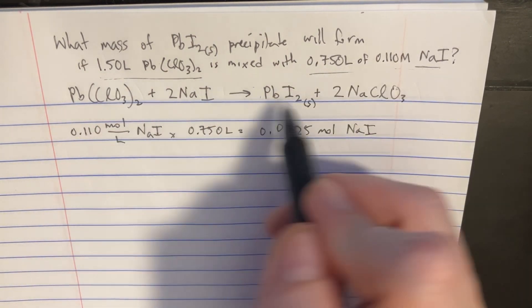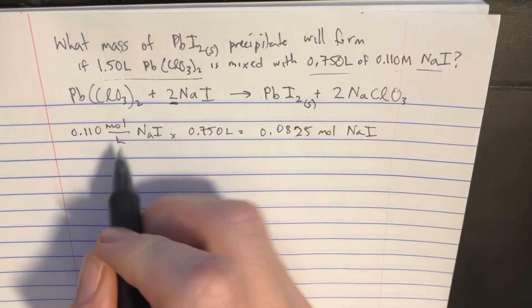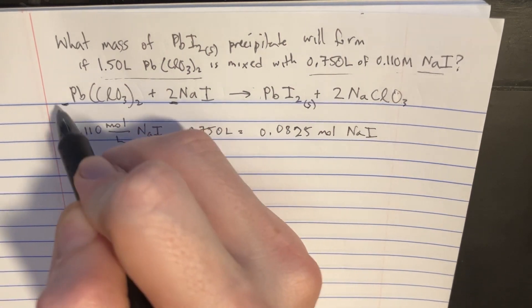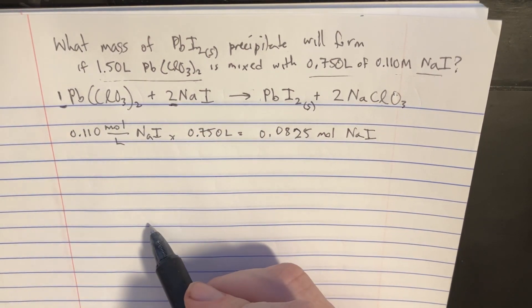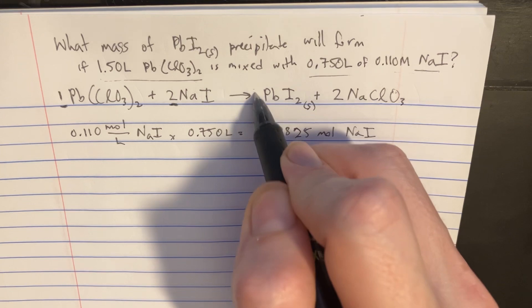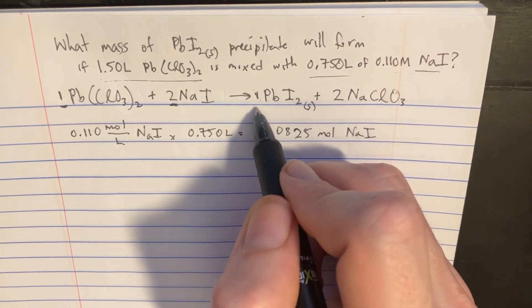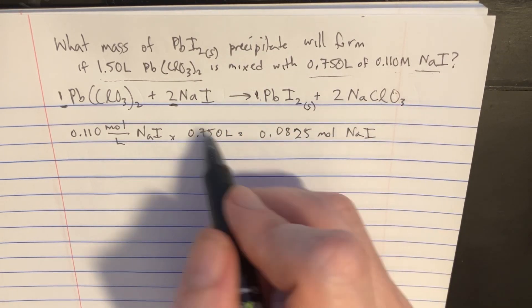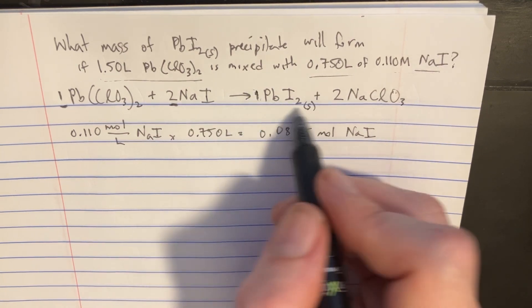Now if we look at these ratios here, let's note that if we have two moles of NaI, we'll have one mole of this stuff. But we also have, if we look over here, we need two moles of this stuff will also yield one mole of this stuff.